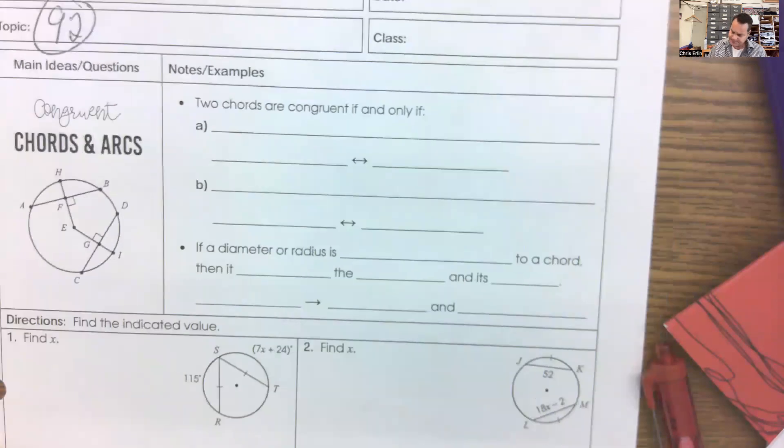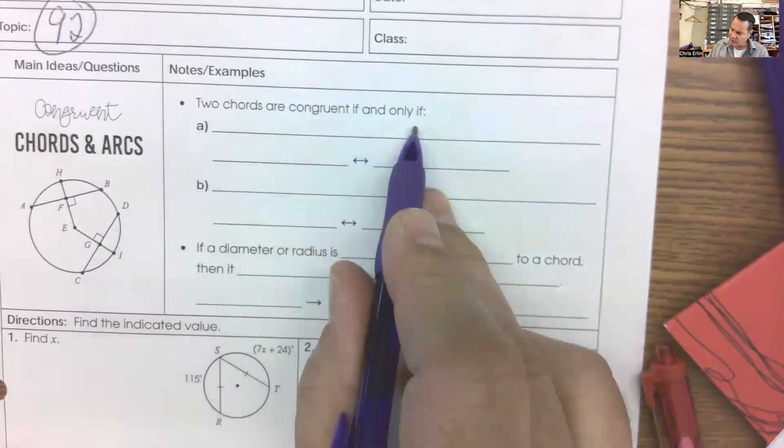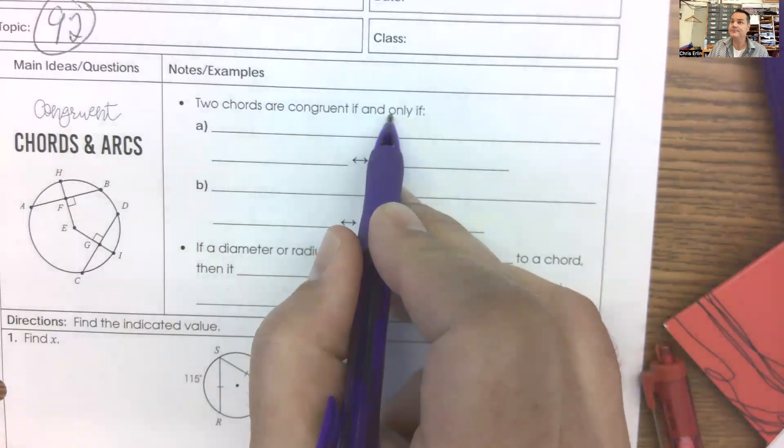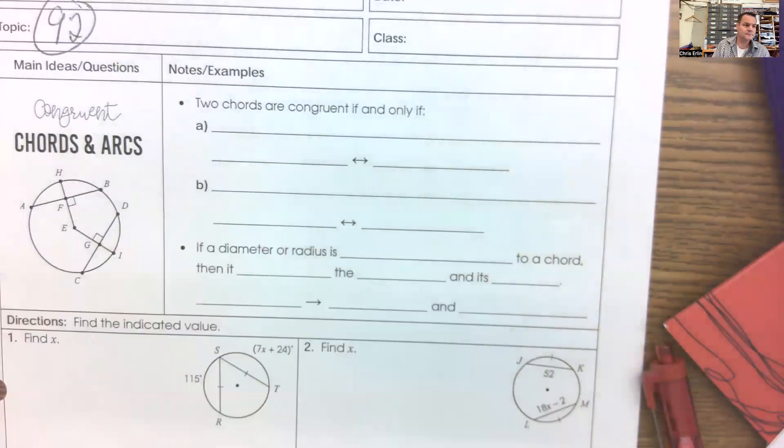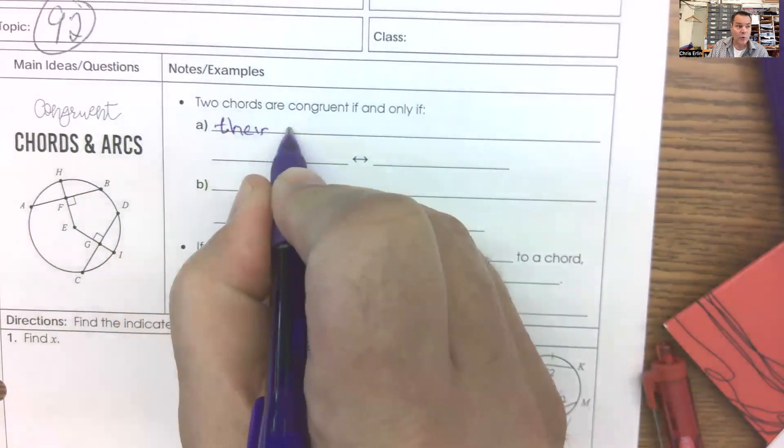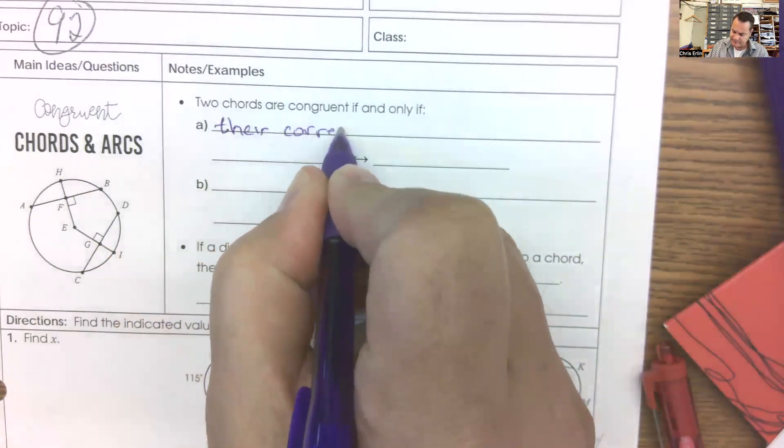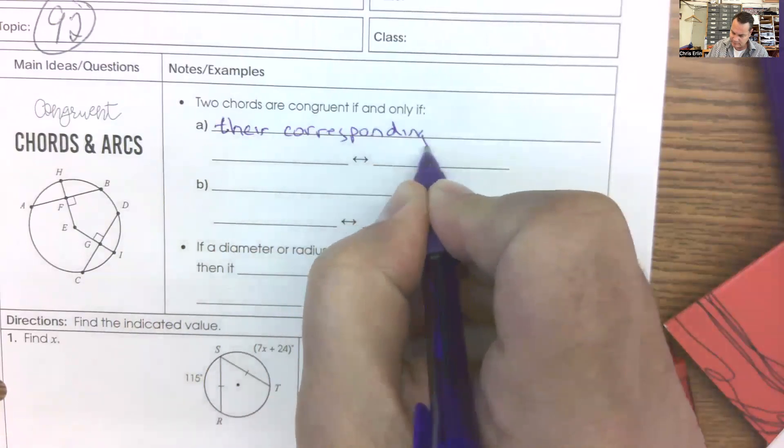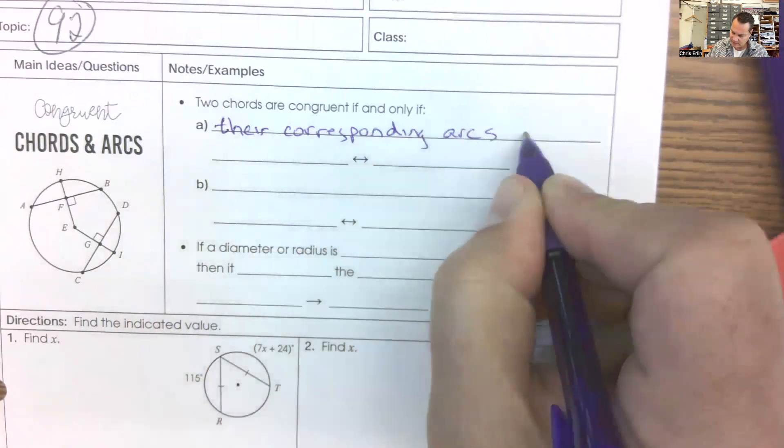So let's put that into our notes for today. Two chords are congruent if and only if. What does if and only if do for us? It means it's a good definition. Good, because we're biconditional. Nice. Let me just get this. So in other words,